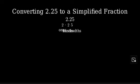To convert a decimal to a fraction, we first need to understand what this decimal means. The digits after the decimal point represent hundredths because we have two digits after the decimal point. To convert this to a fraction, we can write it as 225 over 100.